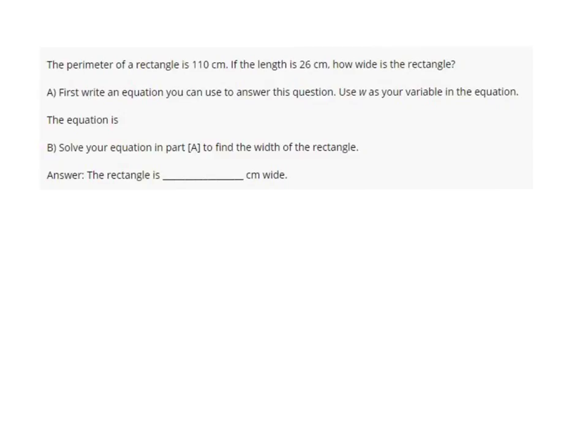So, we want to bring out our perimeter formula, P equals 2W plus 2L, where W is the width and L is the length.